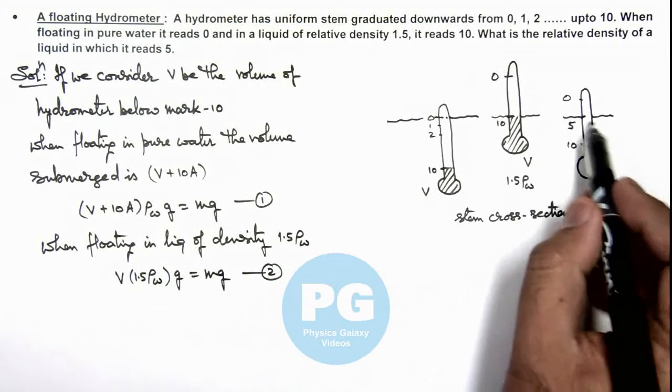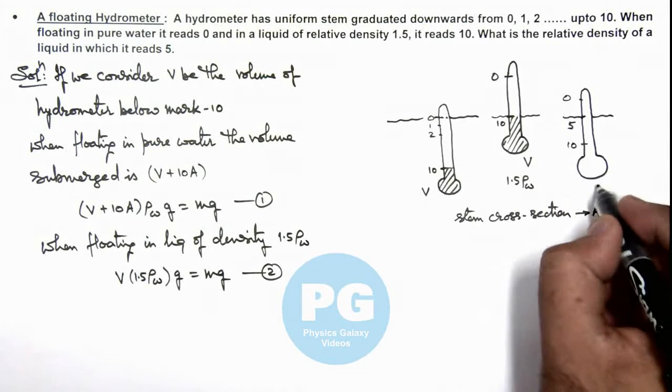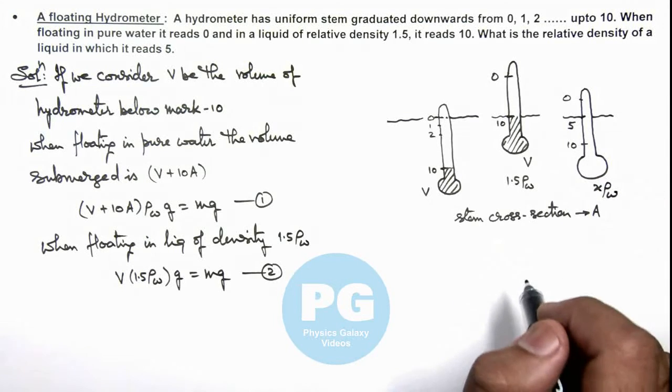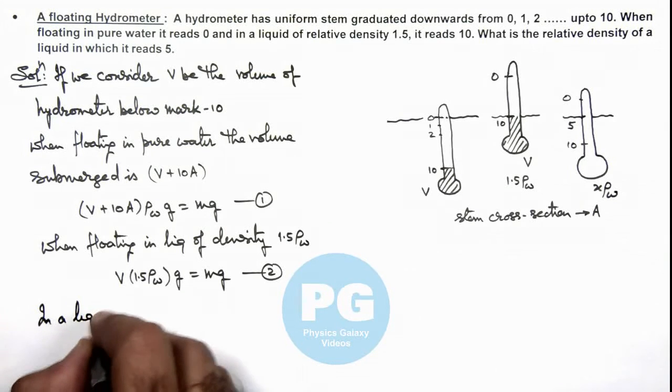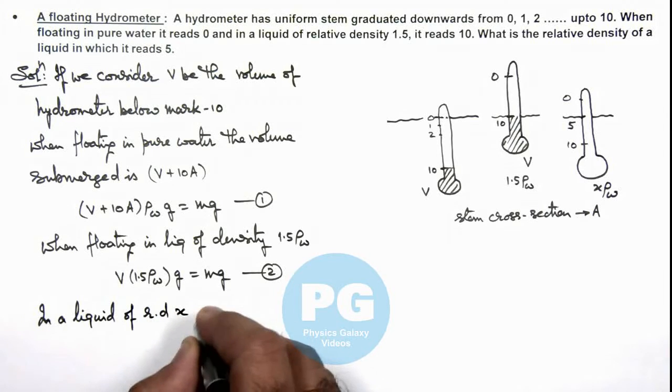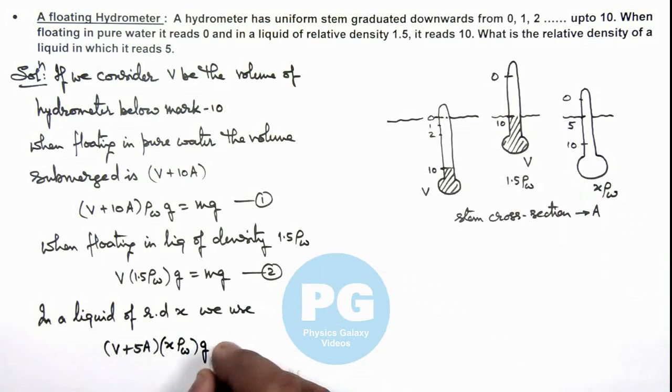Now when it is balanced, it is submerged in a liquid having density given as x ρ_w. If x is the relative density of the liquid, then we can write in a liquid of relative density x, this will be V plus 5A, that is the submerged volume, multiplied by x ρ_w, the density of this liquid, multiplied by g equals mg. This is equation 3.